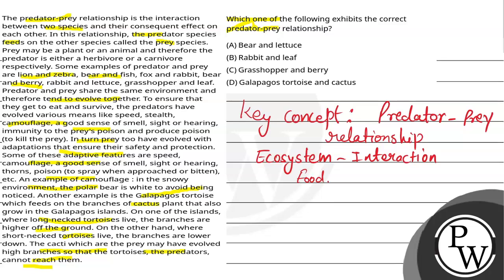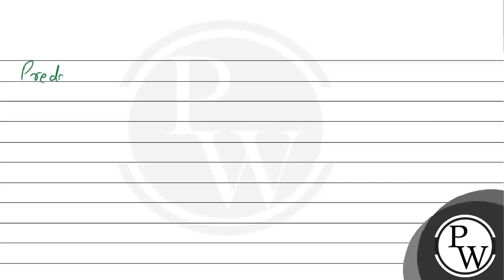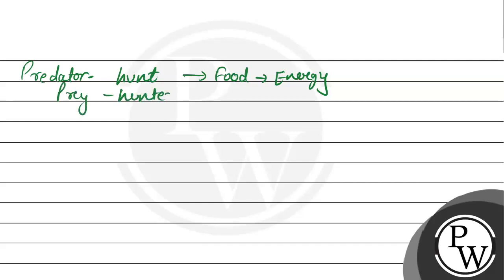If we talk about predator and prey, one organism is going to depend on another organism for food. The predator will hunt other organisms to get food and ultimately get energy. The prey is the one that will be hunted, and the predator is the one that does the hunting. For example, bear and fish — here the bear is the predator and the fish is the prey. They are both in the same environment, so they evolve together as well.